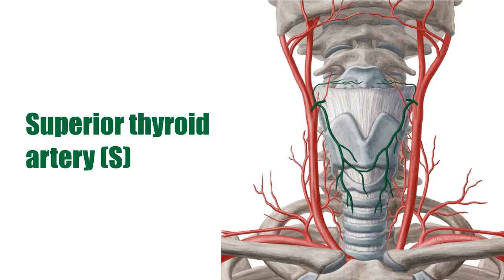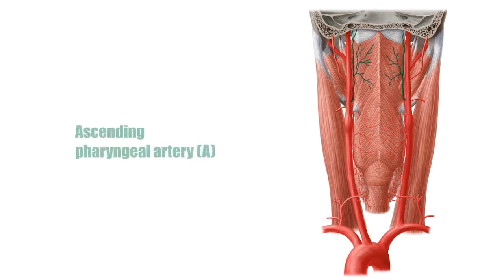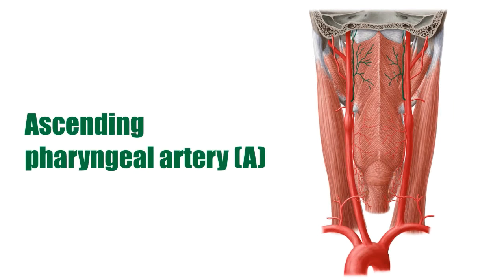The second branch is the ascending pharyngeal artery, which branches off to supply the pharynx, the soft palate, the prevertebral muscles, the middle ear, and the cranial meninges.